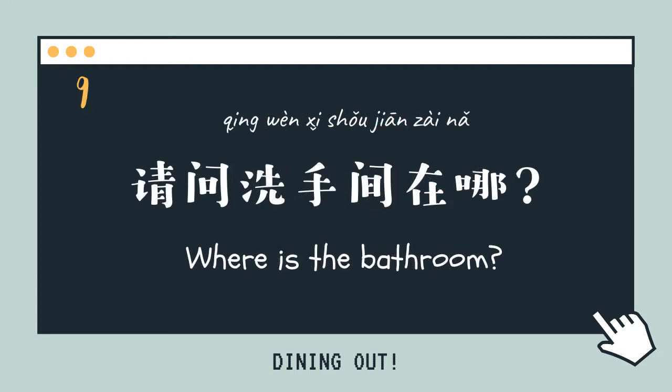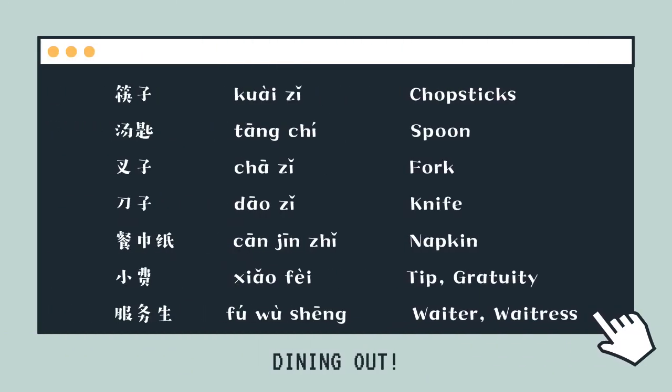請問洗手間在哪? — Where is the bathroom? 請問. Some vocabulary: 筷子 — Chopsticks, 湯匙 — Spoon, 叉子 — Fork, 刀子 — Knife, 餐巾紙 — Napkin, 小費 — Tip/Gratuity, 服務生 — Waiter or Waitress.